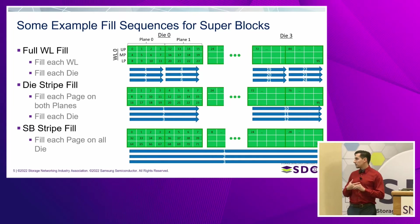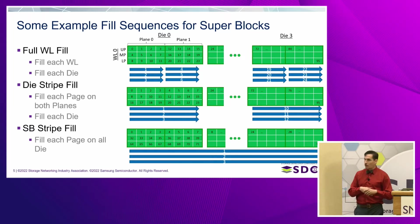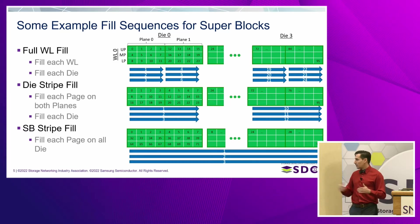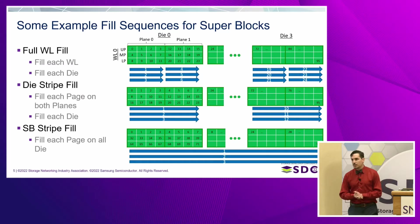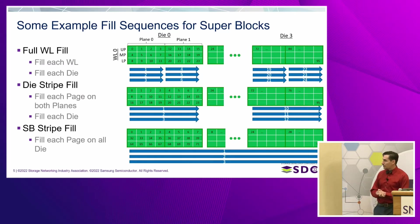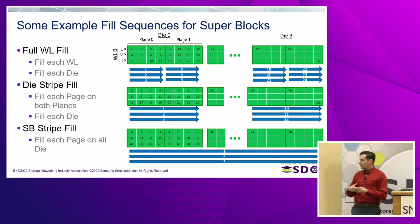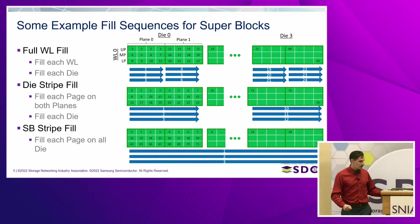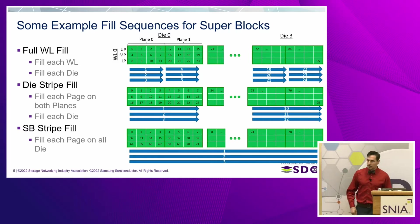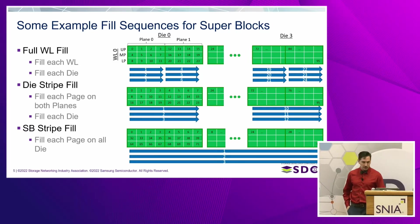I also have a superblock stripe fill shown as a third example. Here we're actually filling all the way across the upper page first across all four dies and all planes, then filling across. This fill sequence would hypothetically allow programming of all the NAND pages in parallel across all the channels.